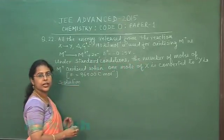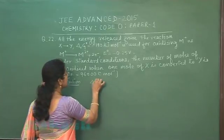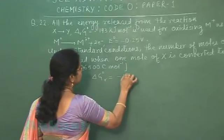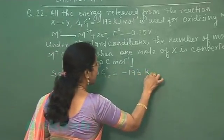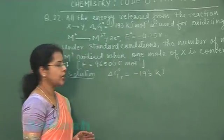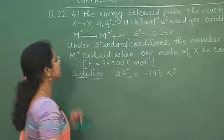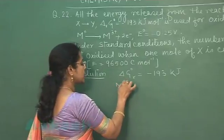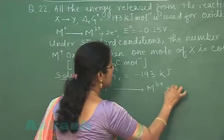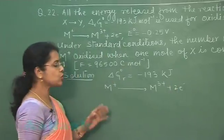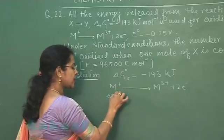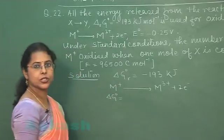In this question, delta G0 of the reaction is given. This is minus 193 kilojoule per mole and this much energy is used for the oxidation of M positive to M3 positive plus 2 electrons. First of all, we will calculate the delta G0 for this oxidation reaction.